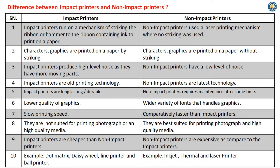Impact Printers produce a lower quality of graphics, while Non-Impact Printers offer a wider variety of fonts and handle graphics better. Impact Printers have slow printing speed, whereas Non-Impact Printers are comparatively faster.